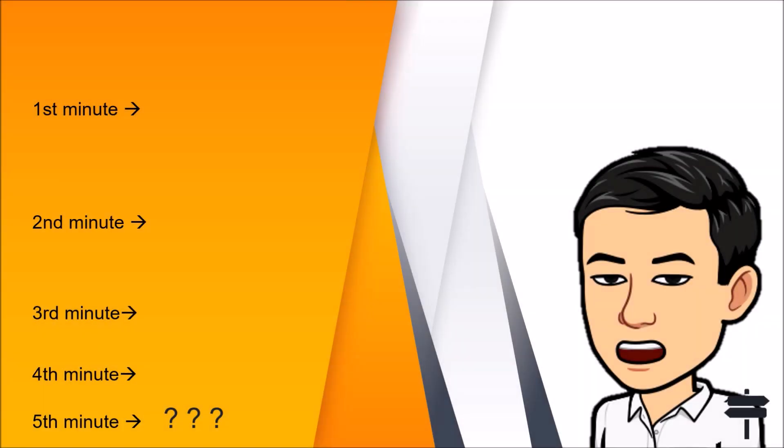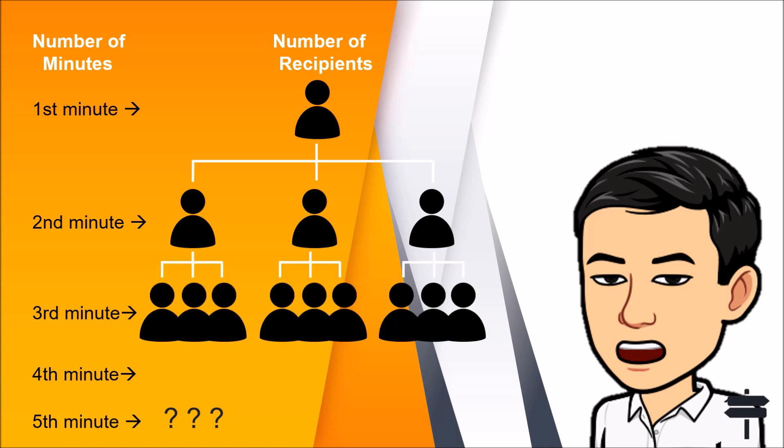The number of recipients who receive fake news after every minute can be illustrated this way: 1, 3, 9, and 27. Based from this illustration, how do you find the number of recipients during the fifth minute? Can you guess the number?